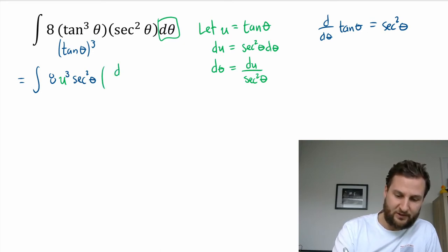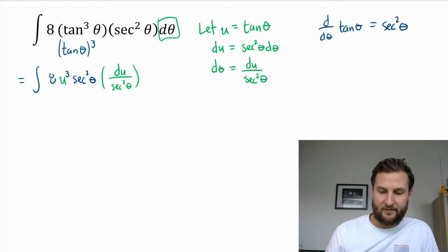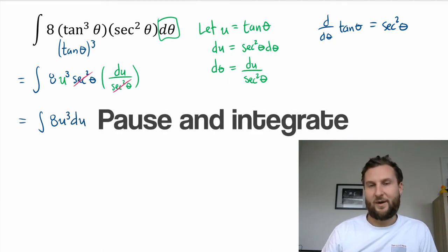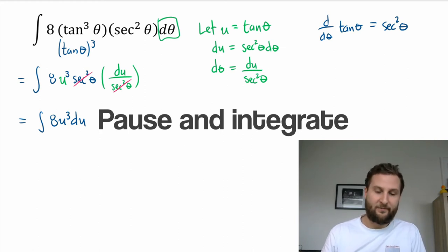My substituted term, so this is du by secant squared. So a little bit of work to get us started there, but look at this: secant squared drops out and my integral should be a lot easier now. So I have 8u cubed du. So go ahead and use the power rule to integrate this and sub back into the original variable.